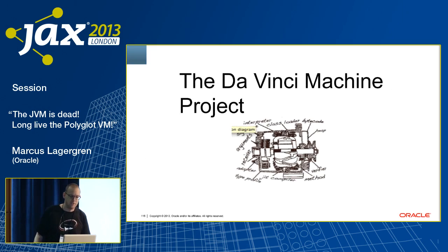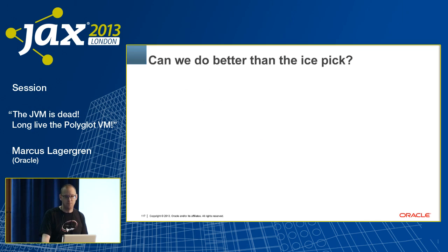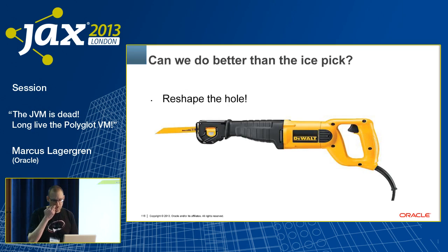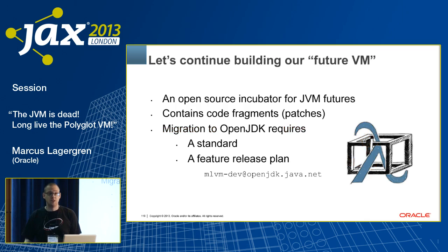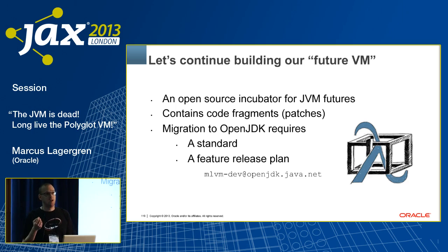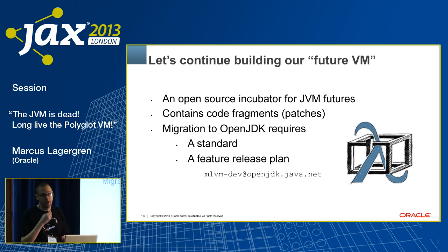I'll end with a few slides about the DaVinci Machine project, which is the general multi-language effort on the JVM — not just JavaScript. Can we do better than just punching holes through the indirection layer? We can reshape the holes to whatever size and shape we want them. The MLVM multi-language VM project is an open-source incubator for JVM futures, containing code fragments and patches that implement different things various dynamic languages need on the JVM. This is where invokeDynamic and the java.lang.invoke package were born — they got a standard, a release plan, and were migrated into Java 7.